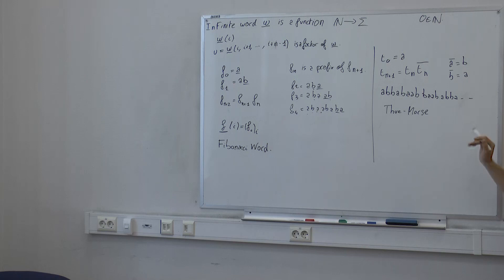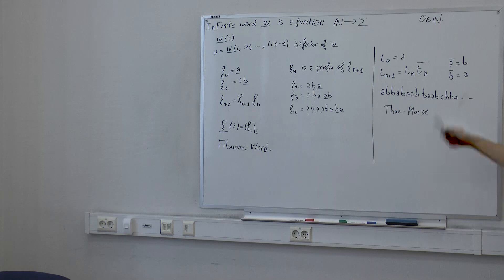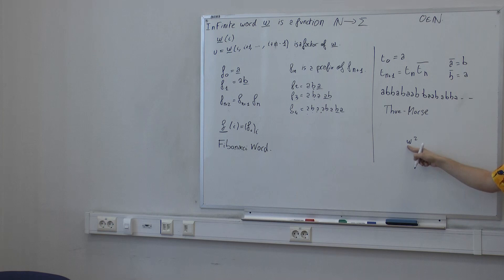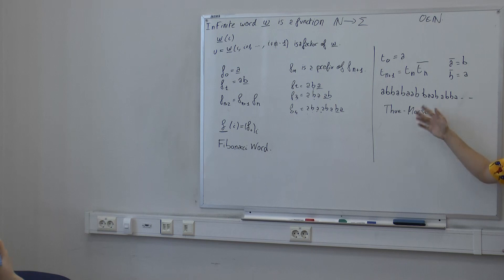There are lots of theoretical problems where you ask yourself: I know that some words exist with this property, I want to find the minimal number of letters needed for this property to be true. For instance: I know that some words exist in which you don't have w-squared as a factor for any non-empty w. What is the minimal number of letters you need to build an infinite word with this property? The Thue-Morse word is very useful in this theory because it has many interesting properties, and it has only two letters — the minimum.